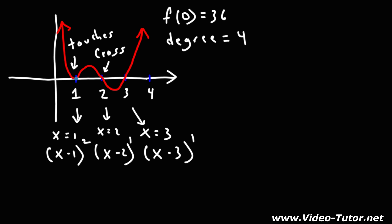So now at this point, what we need to do is set this equal to y and we need to add a coefficient in front of the polynomial function. Using the y-intercept, using this point 0, 36, we need to solve for the constant a. So we're going to replace x with 0 and we're going to replace y with 36.